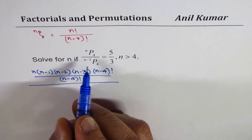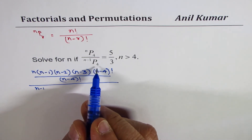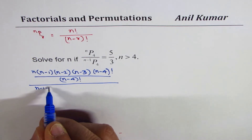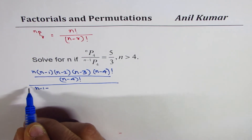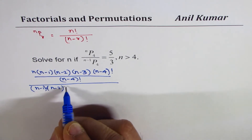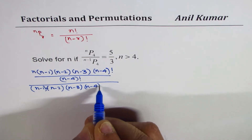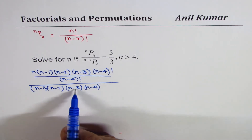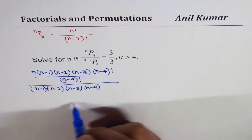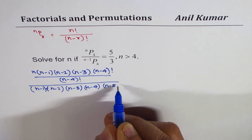In the denominator, we will start with (n minus 1) and then take away 1 each time. So the first term is (n minus 1), the second term is (n minus 2), the third term is (n minus 3), then we have (n minus 4). We have to take four terms. The fifth term, which will be (n minus 5), is going to cancel.